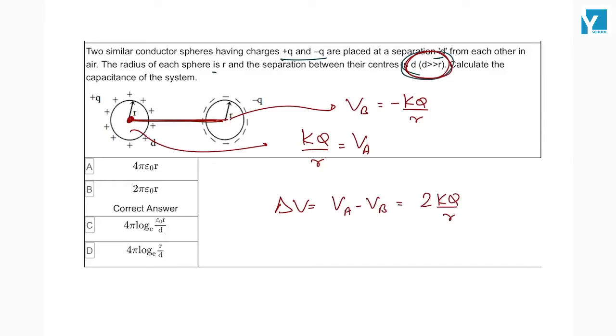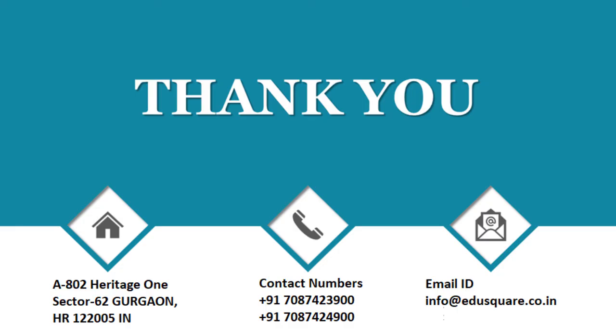And because the change in potential is like this, when you find the capacitance, which is the charge upon change in potential, here will be R by 2K term, or then, 2 pi epsilon naught r. This is going to be the answer.